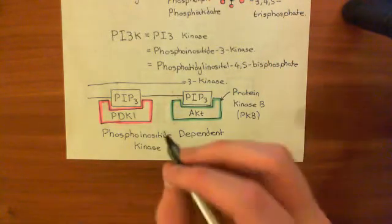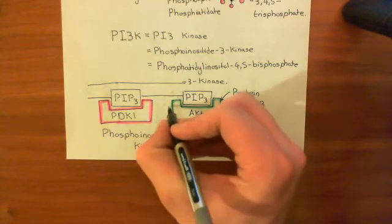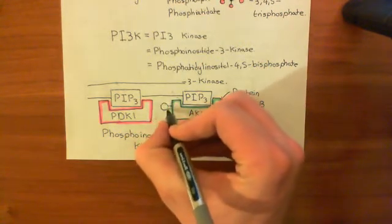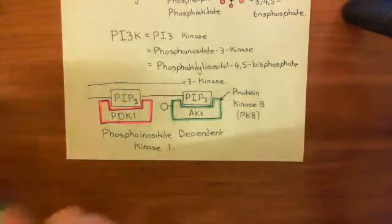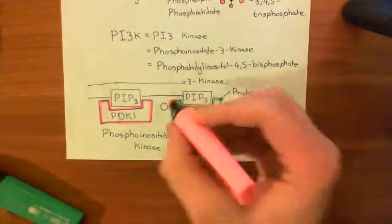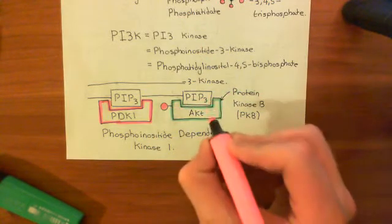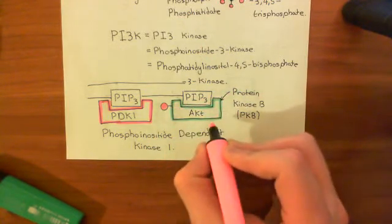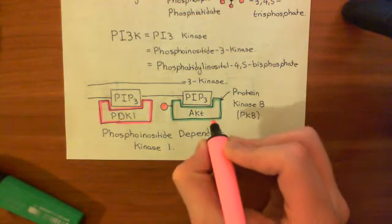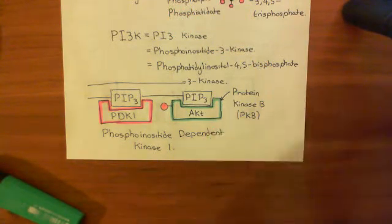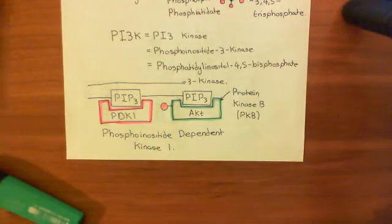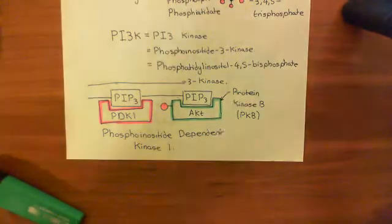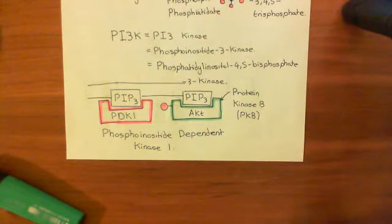And it now is an active kinase enzyme, and it's going to put a phosphate group onto the protein kinase B enzyme. So it sticks a phosphate group onto protein kinase B, and now protein kinase B, or AKT, is active. So now the protein kinase B has become active by being phosphorylated basically by this phosphoinositide-dependent kinase 1 enzyme. So that's so far where we have got to in the PI-3 kinase AKT mTOR pathway.